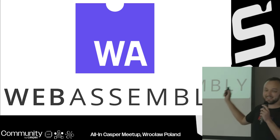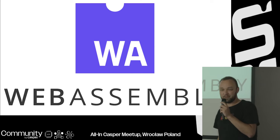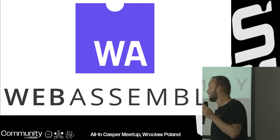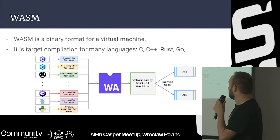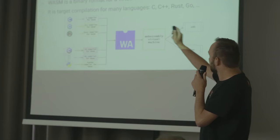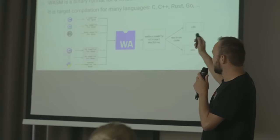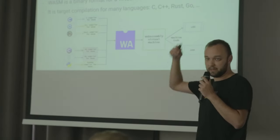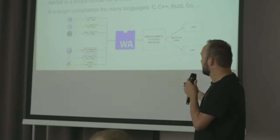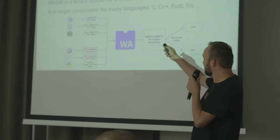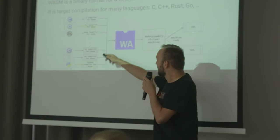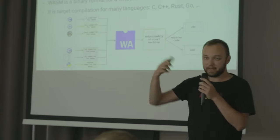Our main actor is Web Assembly — a virtual machine different from EVM, used by many blockchains. Web Assembly is a binary format for a virtual machine: it has a list of opcodes, and the good part is that it is a compilation target for many languages — C, C++, Rust, C#, Go, Python, and others.